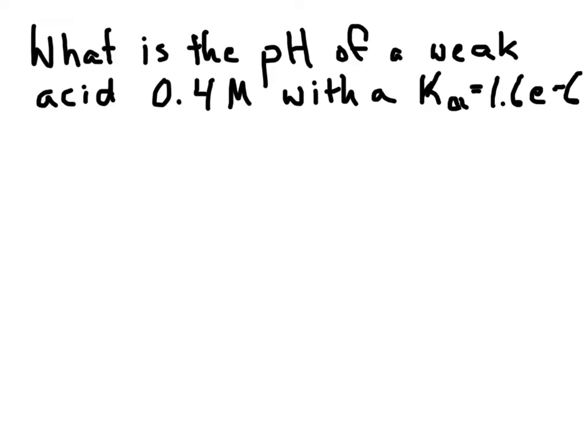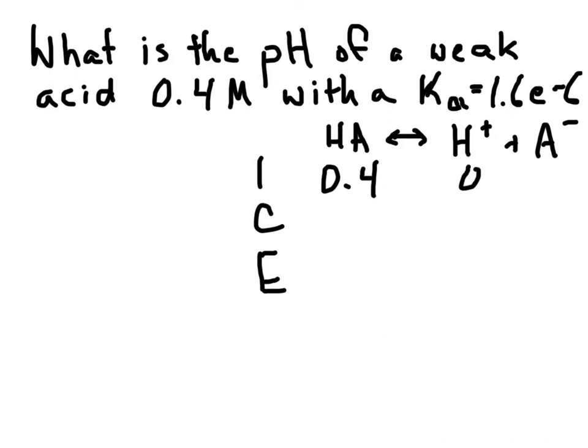So first thing is set up our ICE chart. And since they don't tell us what the acid is, we're just going to use the generic acid form. So we have the acid HA. A could be any anion of that weak acid, going to H positive and the anion, which would be some negative charge. And then we're going to start with the initial. The initial for the acid is 0.4 concentration. Initial concentration of the hydronium ion or the hydrogen ion is 0. The anion would also be 0.